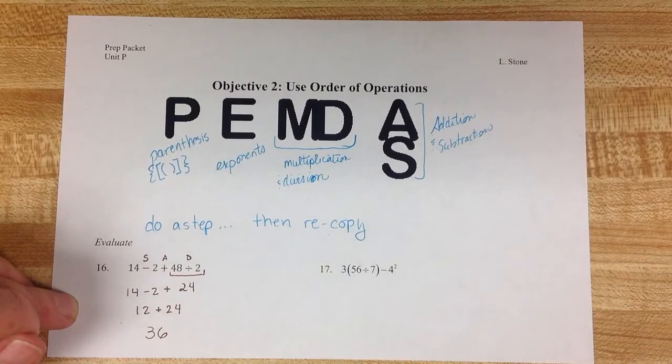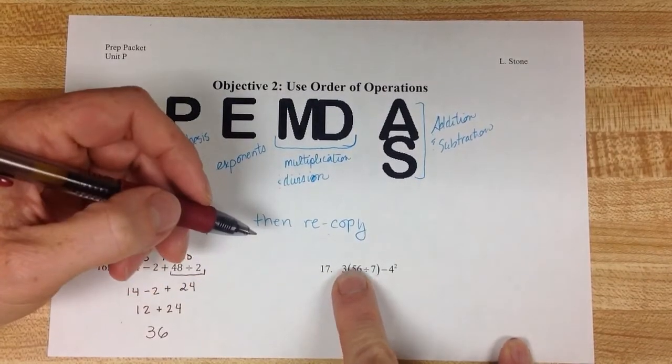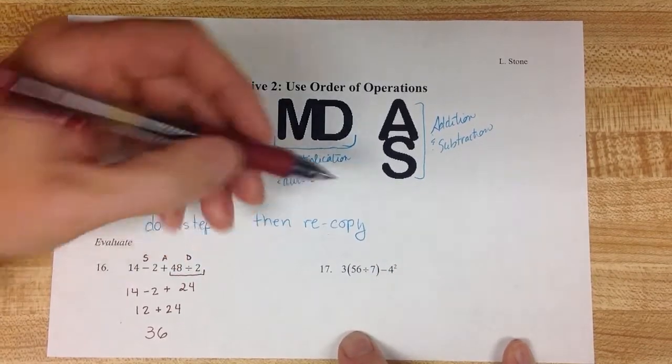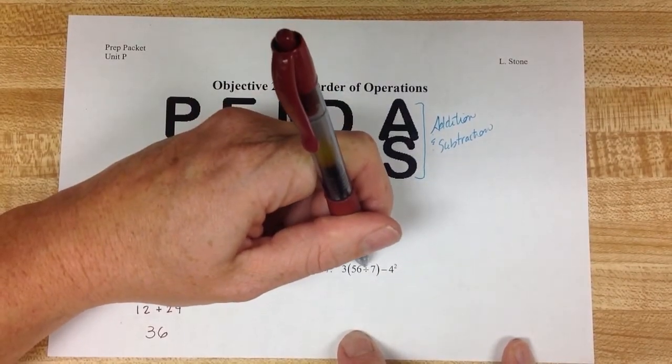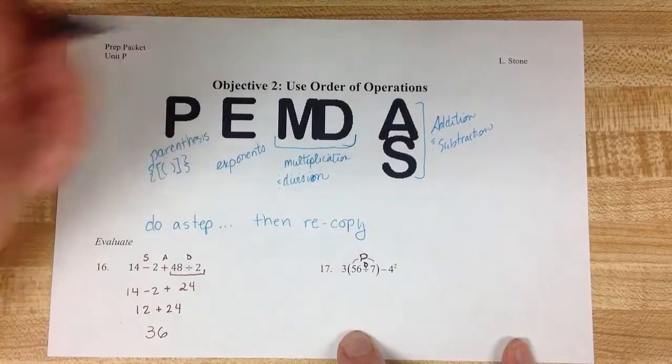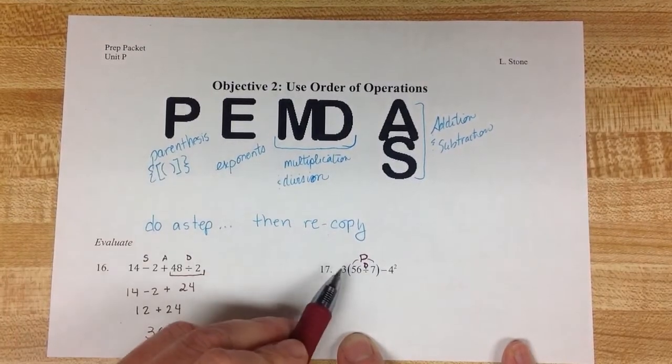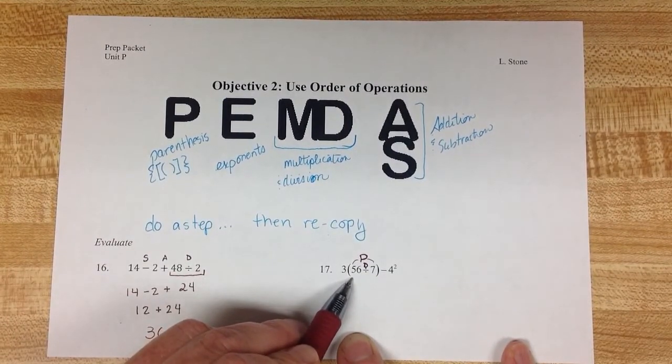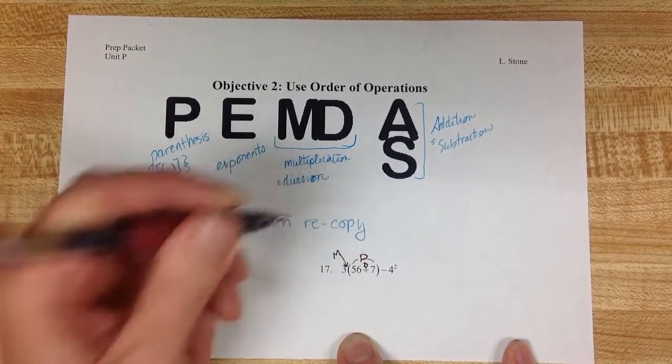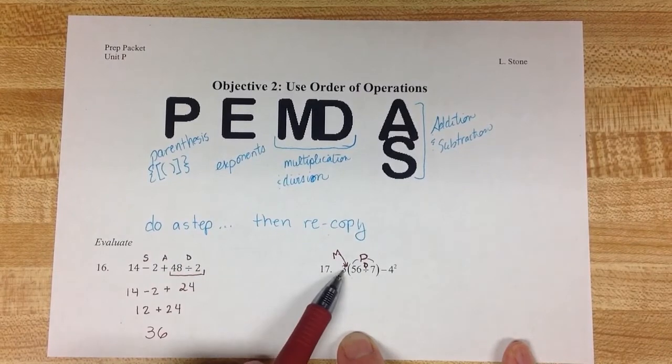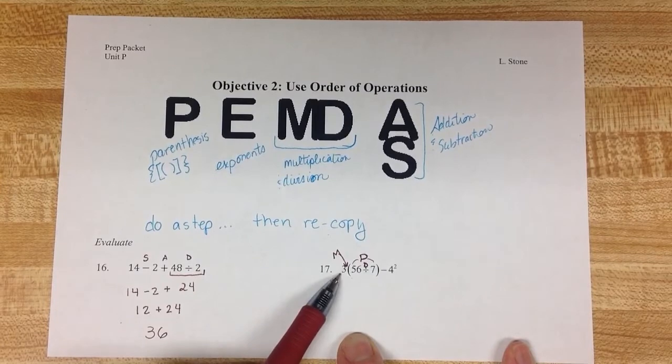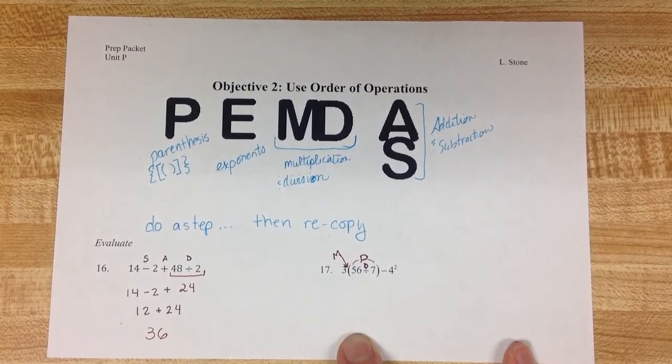Looking at the next problem, 3 and then parentheses 56 divided by 7 minus 4 squared. Well, there's division happening here, but it's happening inside a set of parentheses. Then this 3 that's right up against the parentheses with no math in between it means that multiplication is happening there. One of the ways we show multiplication is to say 3 and then parentheses with another number. That means that we're taking that 3 and multiplying it by whatever's inside the parentheses.